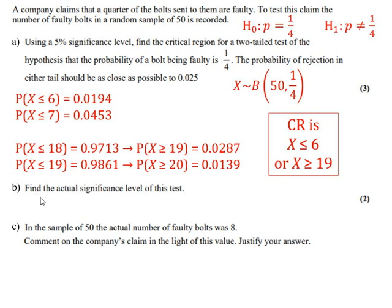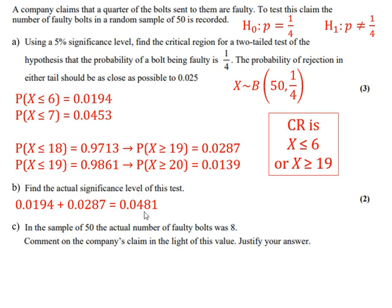Part b asks for the actual significance level of the test. This is the probability of X lying in the critical region: P(X ≤ 6) + P(X ≥ 19) = 0.0194 + 0.0287 = 0.0481. So the actual significance level is 0.0481, which is pretty close to the 5% significance level.